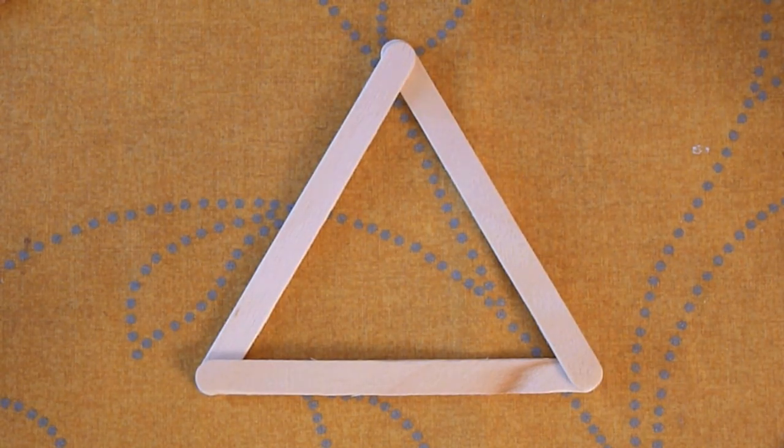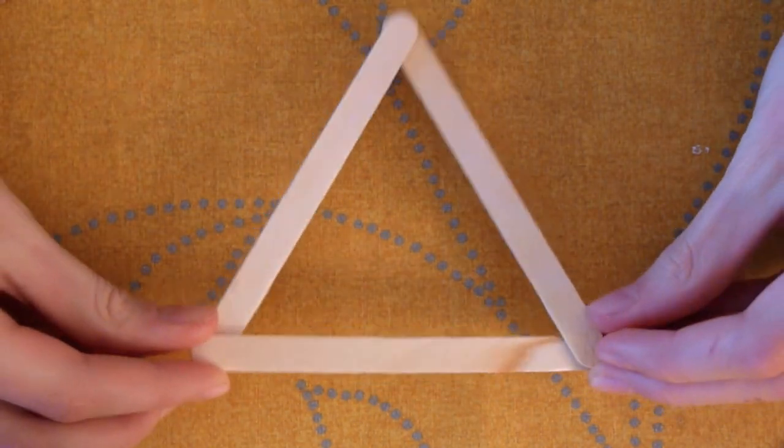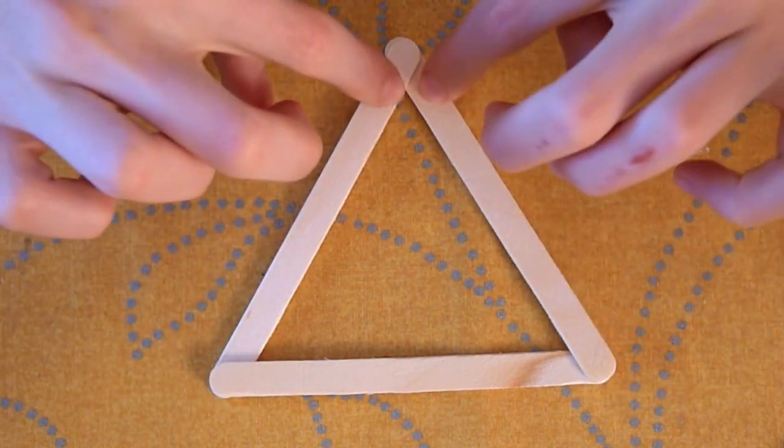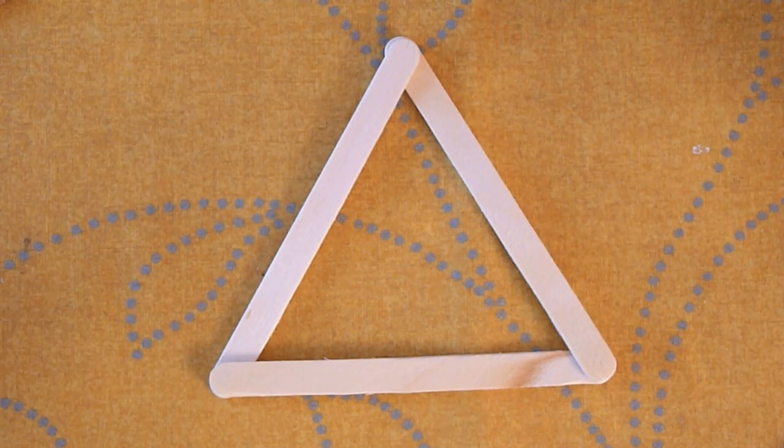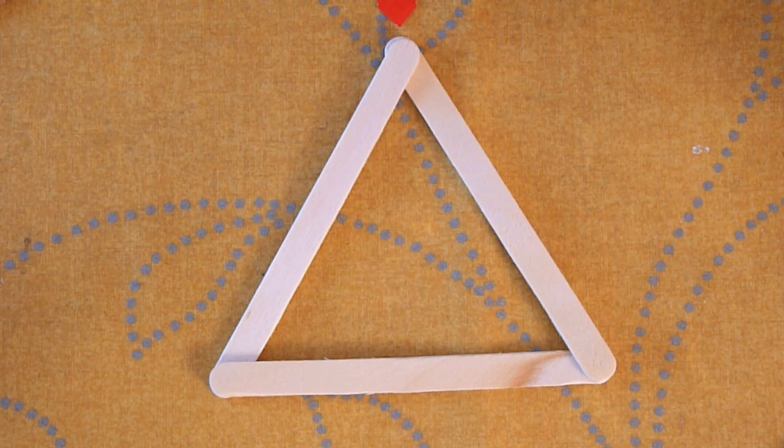So let's say you wanted to build a popsicle stick bridge. Here's a tip how. Triangles, you probably know, you've probably heard that they're very strong. And this is explaining why and how to use them.